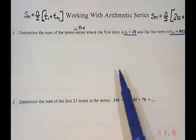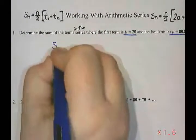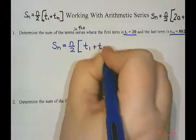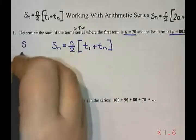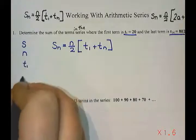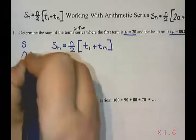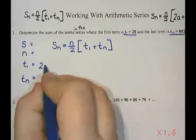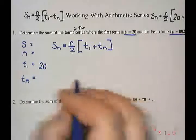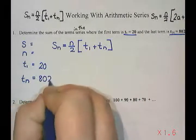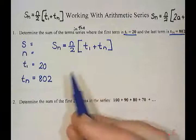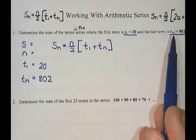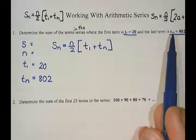So here I'm going to start by writing down the formula, so S_n, the sum of the terms, is n over 2 times t₁ plus t_n. And I'm going to list S_n and then I've got t₁ and t_n. I know term one is 20, so that's my term one is 20. And I know term 14 is 802, so I'm going to put that in for my t_n. My last term is 802. But in order to find the sum I need to know the number of terms.